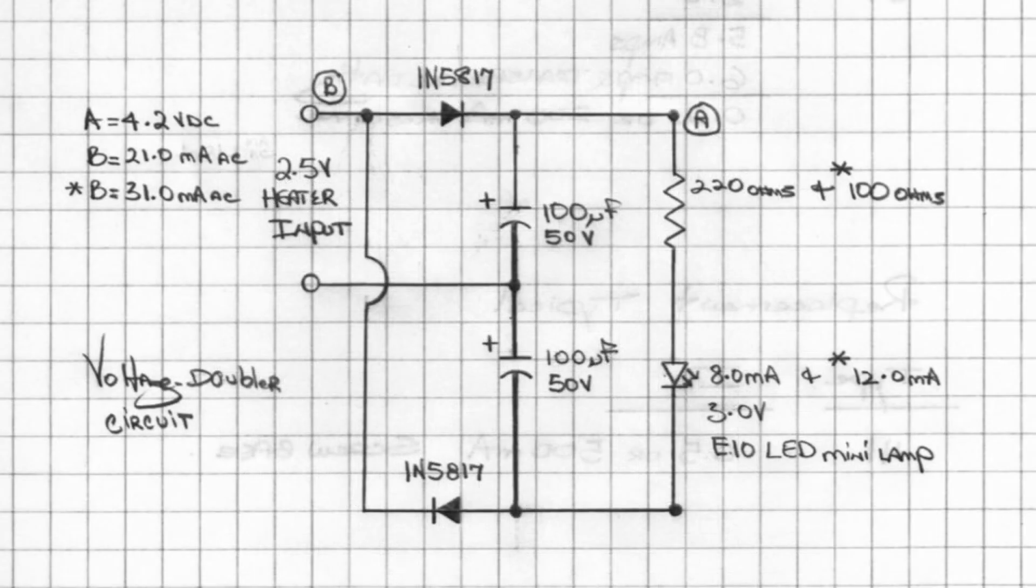...1N5817 diodes were used with common 100-microfarad caps rated at 50 volts—a little overkill, but that's what I had on hand. For the LED, I used a 220-ohm and a 100-ohm resistor, and you can see the difference in current to the LED.